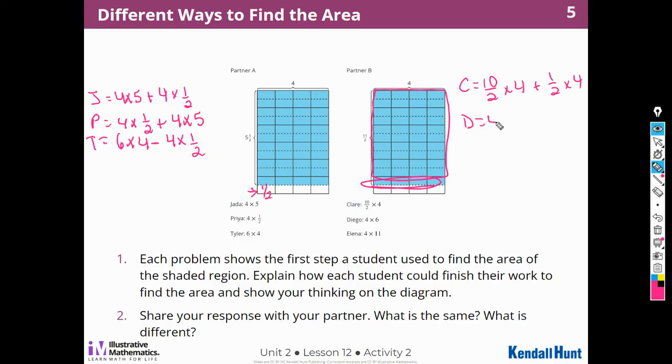Diego started with 4 times 6. Kind of like Tyler. They want to be different. 4 times 6. So again, I'm going to have to subtract out. Let me erase what I have on here. I'm going to have to subtract out this piece. Because if he did 4 times 6, he's doing 1, 2, 3, 4, 5, 6. The whole enchilada, right? The whole rectangle. So I have to take this piece out. So I'm going to subtract 1 half times 4. Because each of these is 1 half.